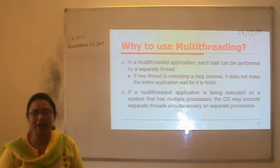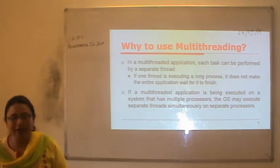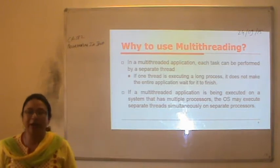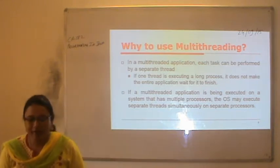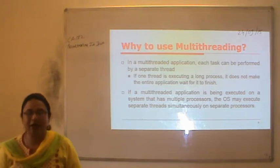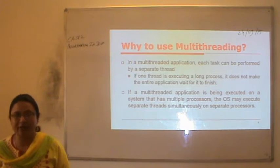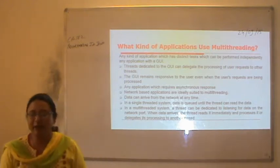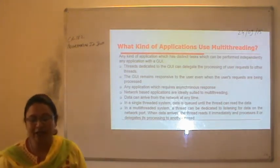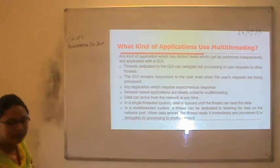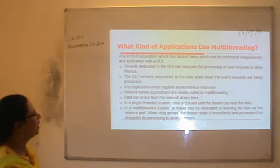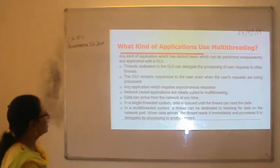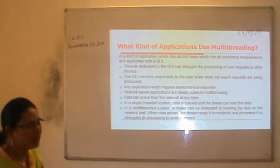In a multi-threading application, each task can be performed by a separate thread. If a thread is executing a long process, it does not make the entire application wait for it to finish, so multiple tasks run simultaneously. If a multi-threaded application is executed on a system with multiple processors, the operating system will execute separate threads simultaneously on separate processors.